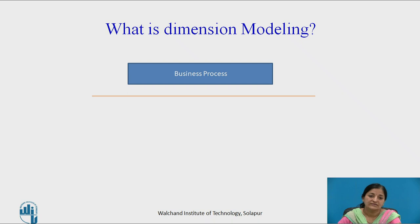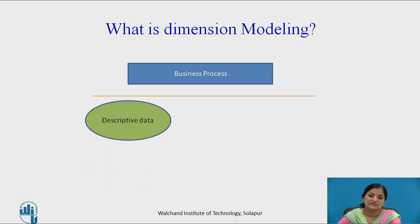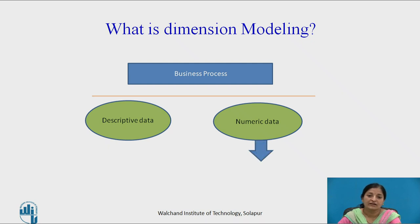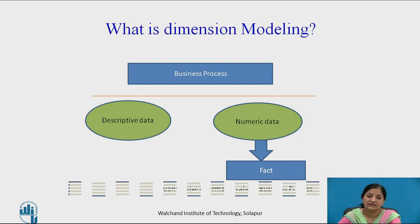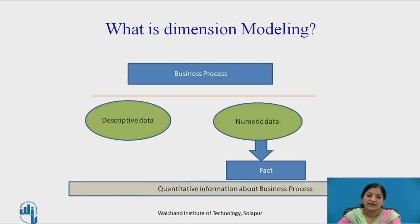Every business process consists of two types of data: numeric data and descriptive data. Numeric data are also called facts — they are the quantitative information about the business processes. These facts help to measure the performance of business processes.